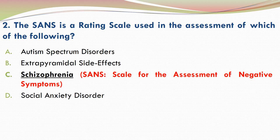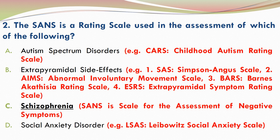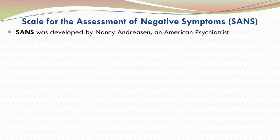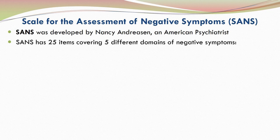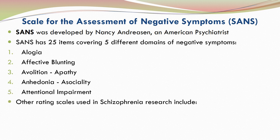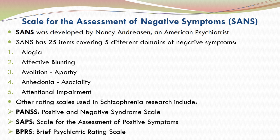SANS stands for Scale for the Assessment of Negative Symptoms. I have listed rating scales used for the other options mentioned in the question — those interested can pause and note down the details. SANS was developed by Nancy Andreasen, an American psychiatrist. It has 25 items covering five different domains of negative symptoms, which are listed in this slide. Other rating scales used in schizophrenia research include PANSS, SAPS, and BPRS.